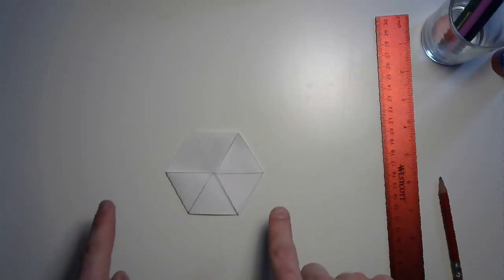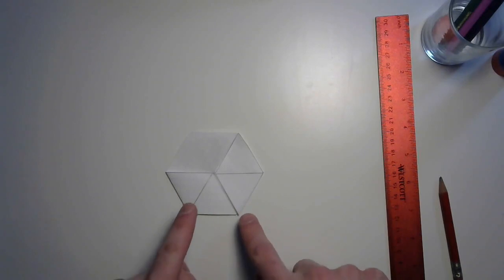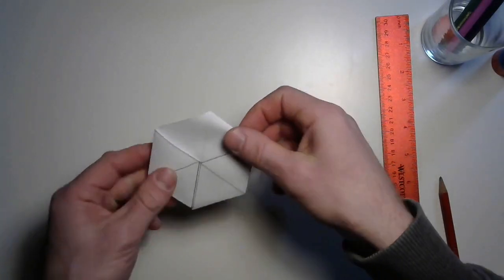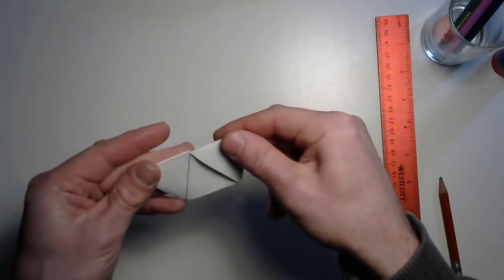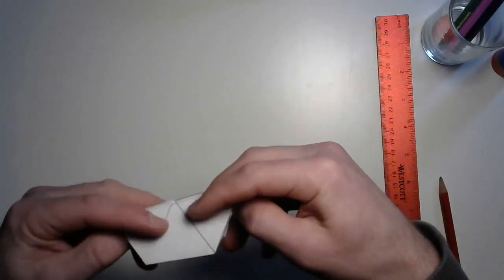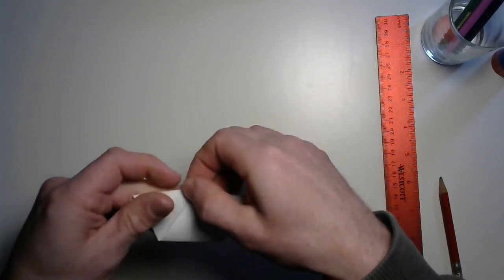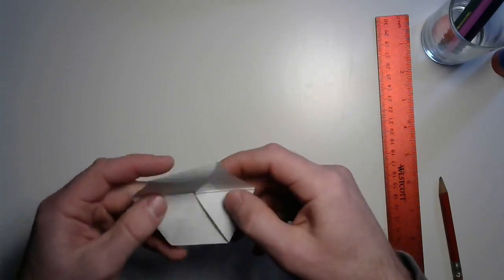All right, all nice and dry. So what you're going to do next is just give this a fold along each axis. So fold it in half, and then rotate it and fold it in half, and then rotate it and fold it in half along that last axis.